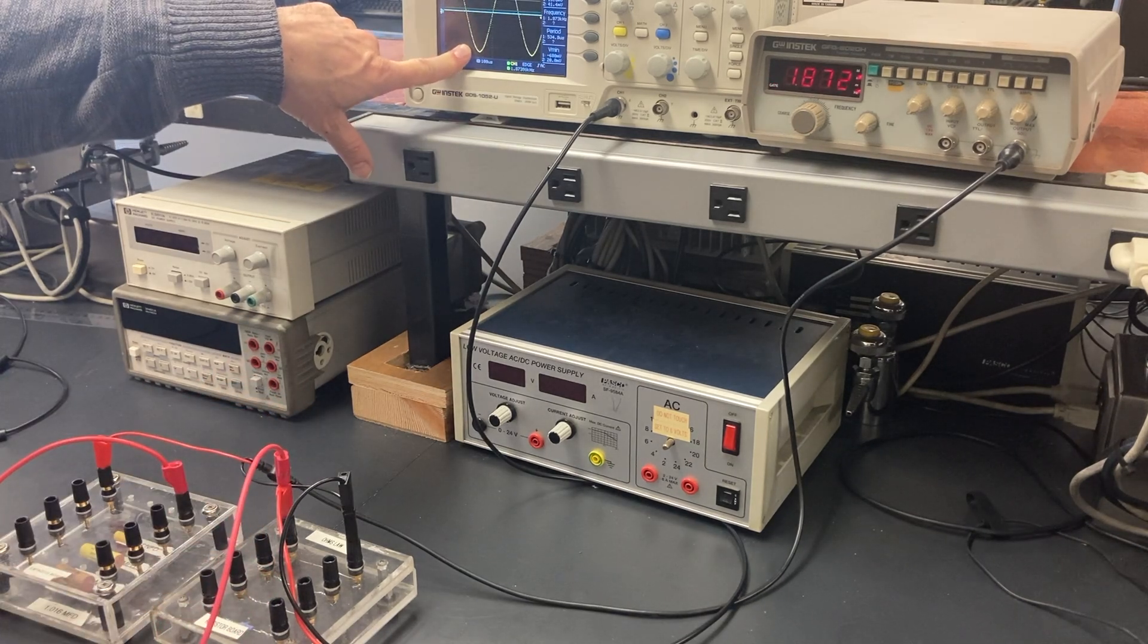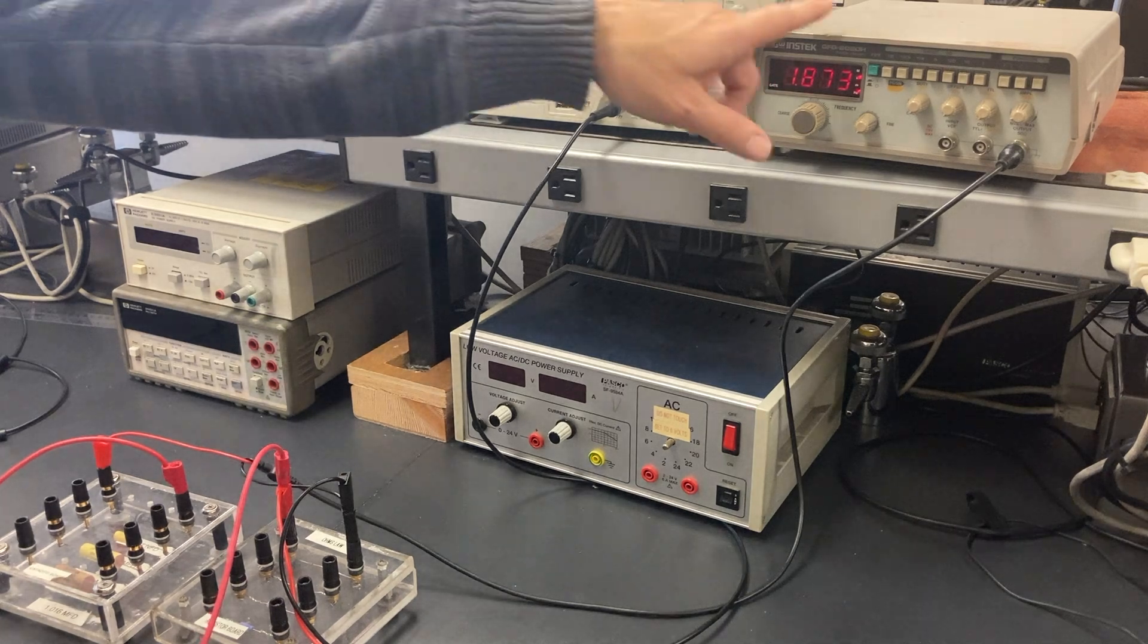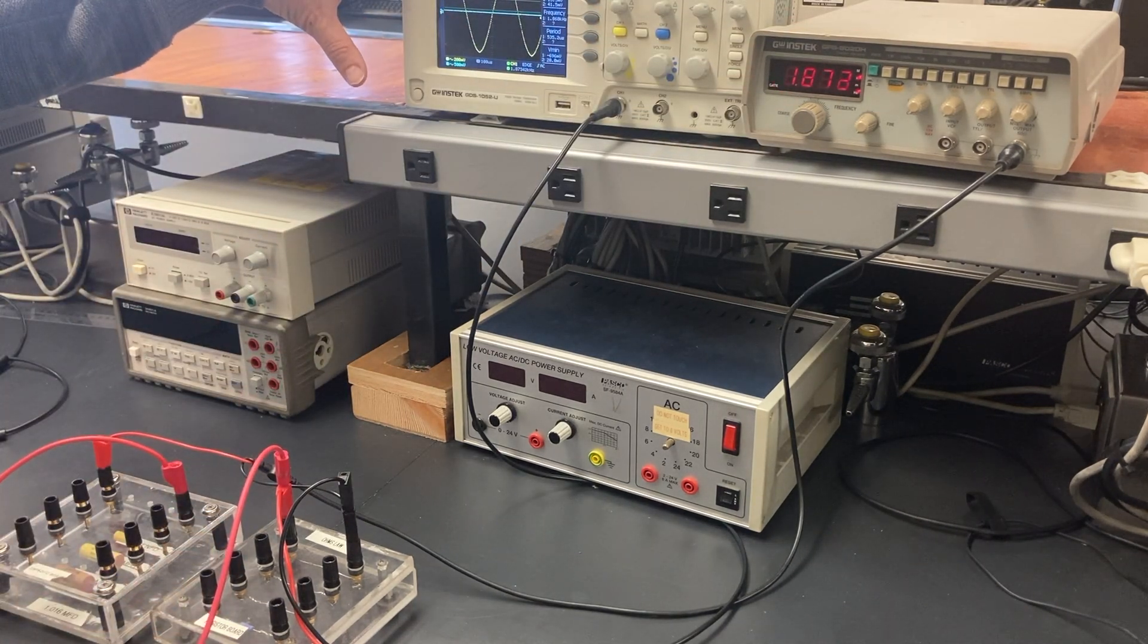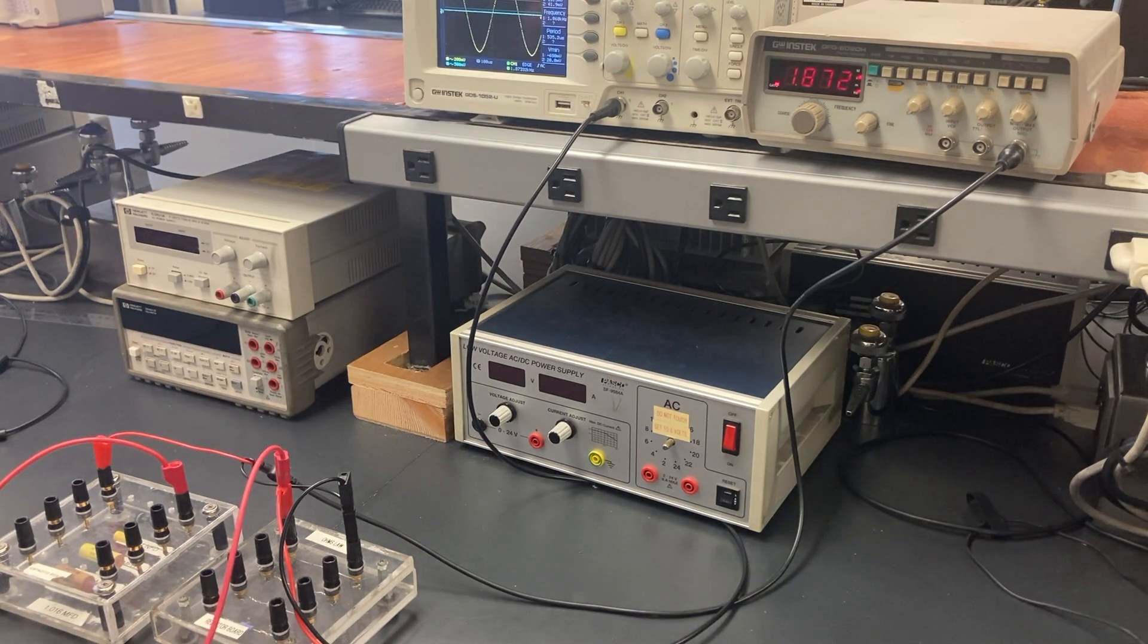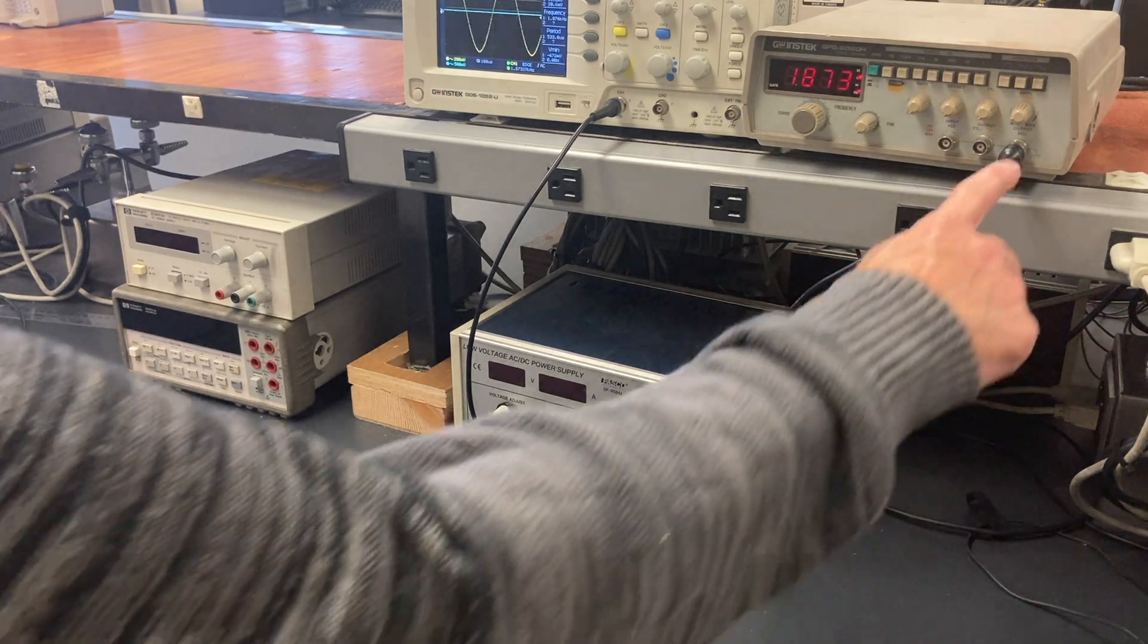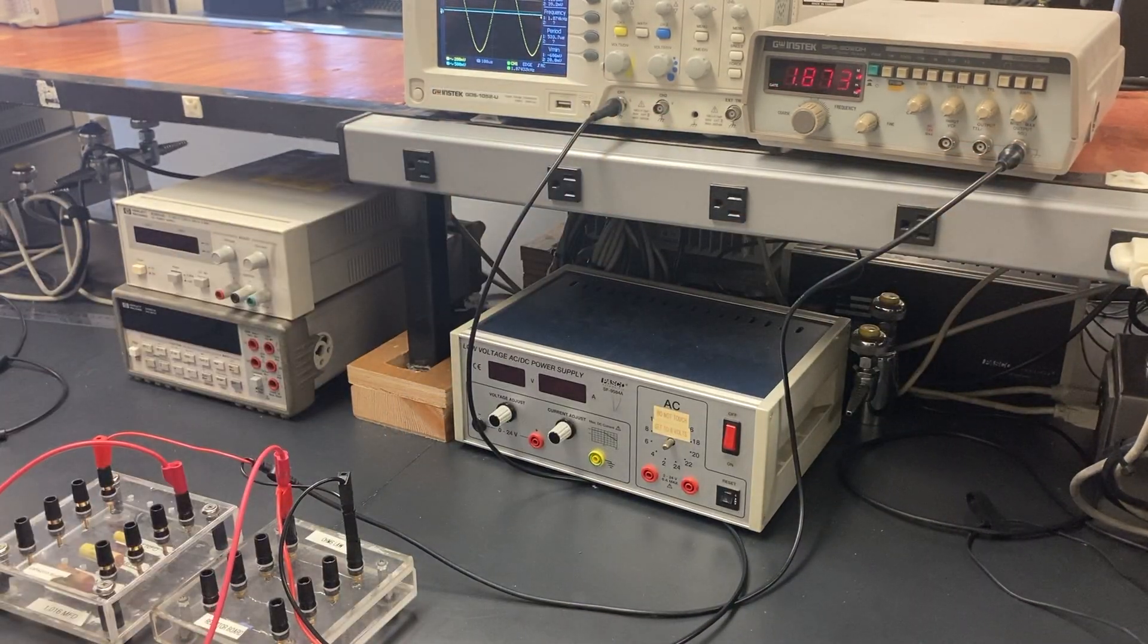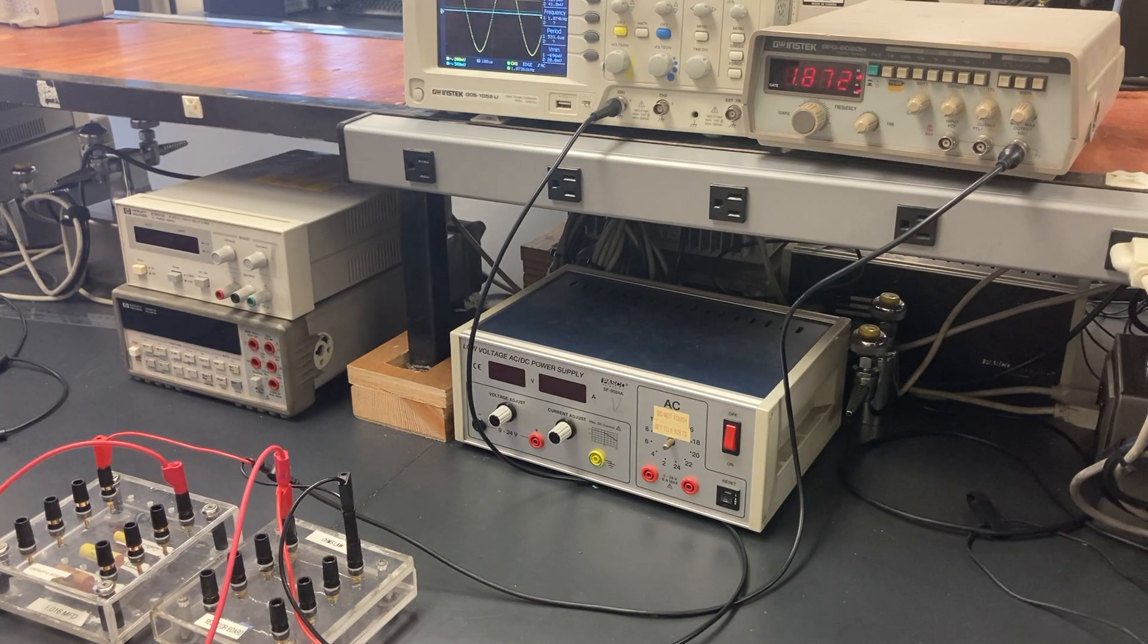Now, oftentimes when we want to see a signal on the oscilloscope coming from the function generator through a circuit, we want to compare that to the signal coming straight out of the function generator. So let's add one more thing into this circuit. Let's add a path that goes from this output to channel two of the oscilloscope. That way I can see both signals.